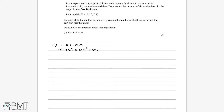So we multiply 0.9⁴ by 0.1. To four decimal places, this equals 0.0656. This is the probability that the child first hits the target on their fifth throw. This question is worth two marks: the first method mark comes from identifying the equation 0.9⁴ × 0.1, and the answer mark comes from finding the probability equals 0.0656.